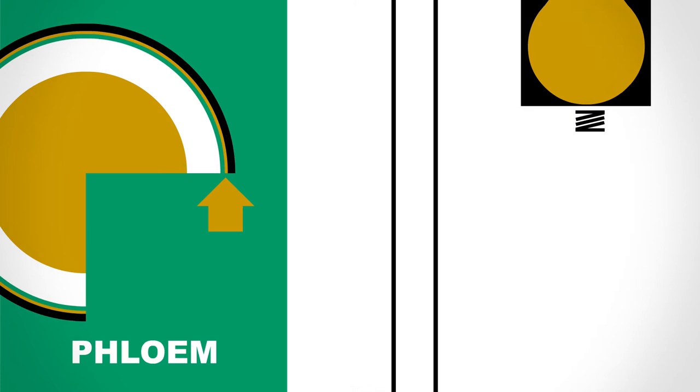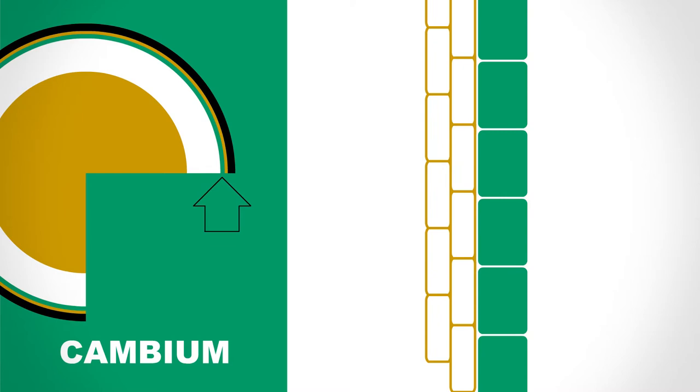Next comes the cambium. This is the growing part of the trunk. On one side, it creates new wood cells, and on the other, it creates new bark.